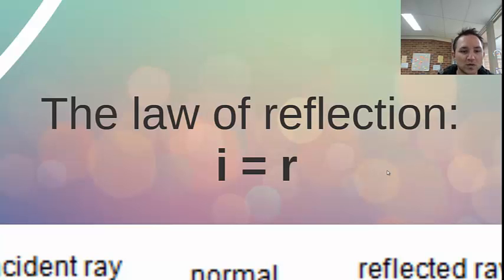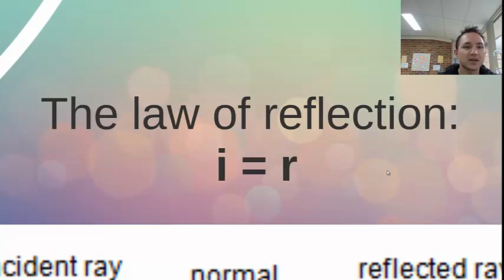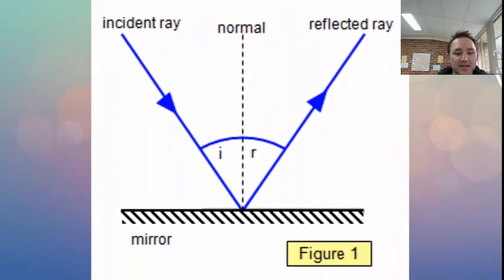Where I equals the incident angle and R equals the reflected angle. You can see there on the left, the incident ray comes in. The normal is the imaginary line that hits the mirror at 90 degrees, or the surface at 90 degrees, and then you've got a reflected ray that rebounds off the mirror. And the two angles, I and R, are the angles from the rays to the normal.